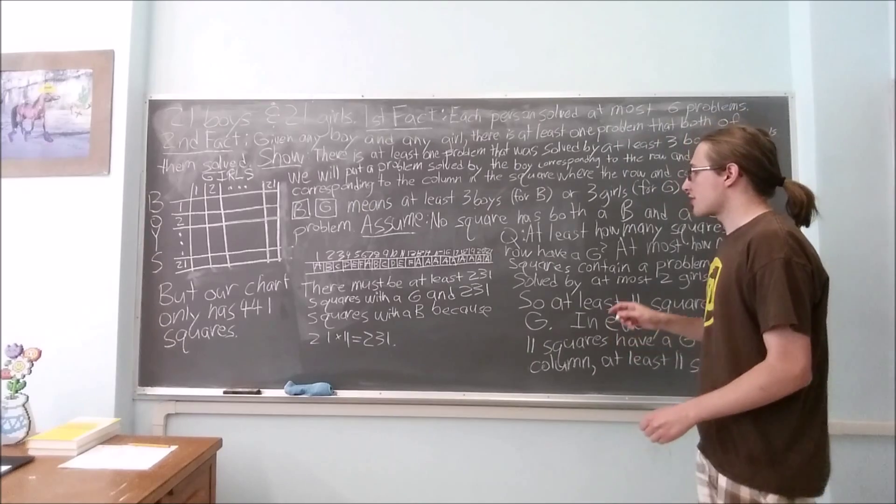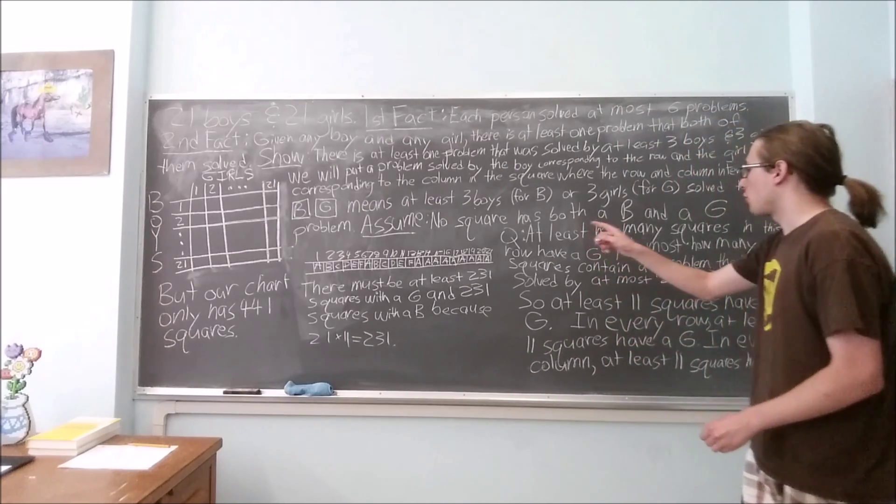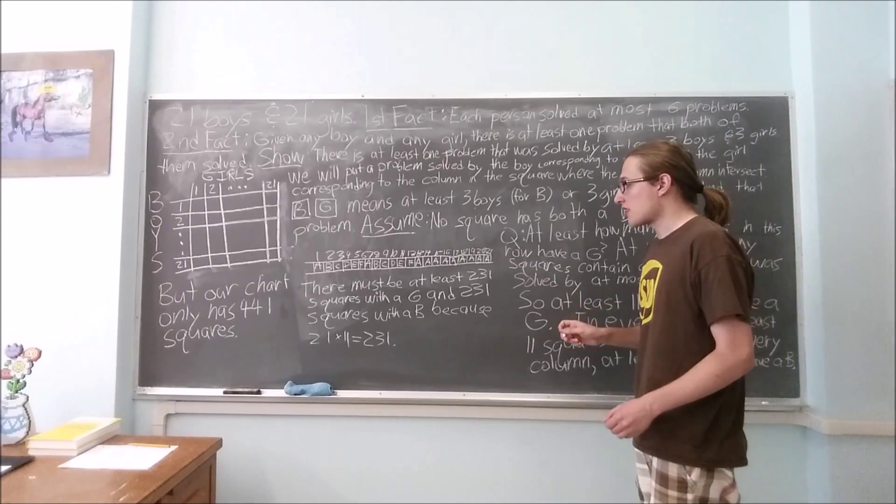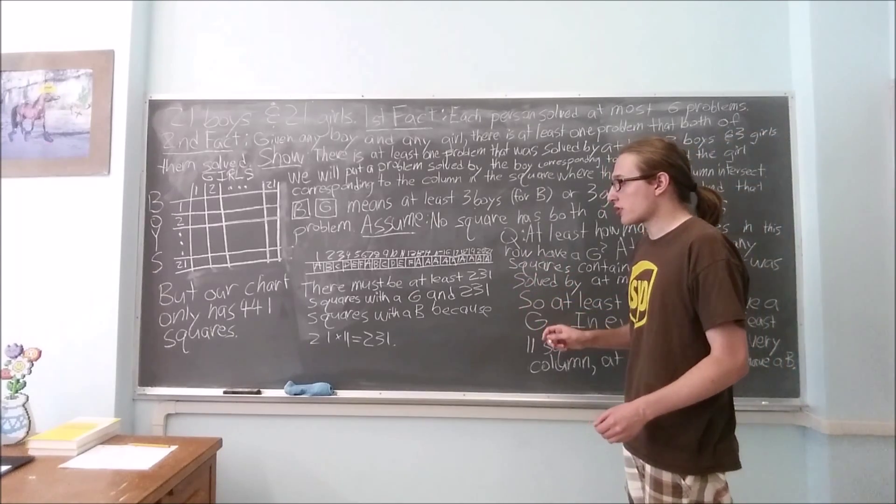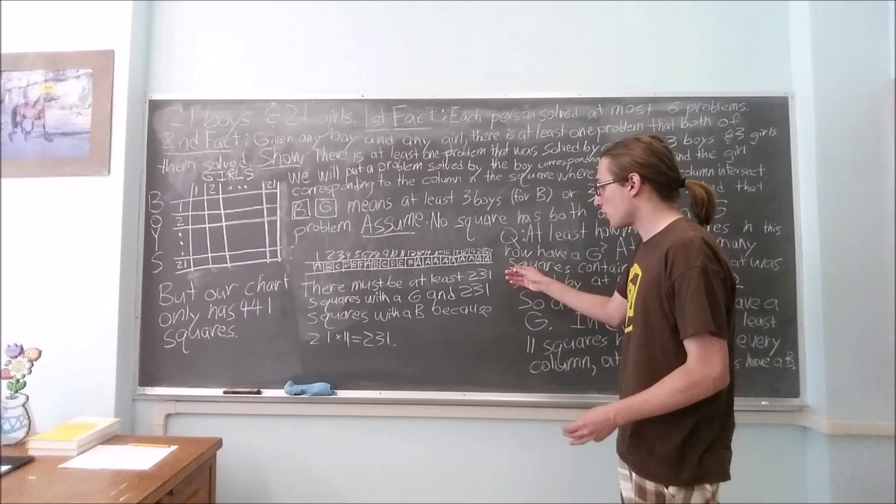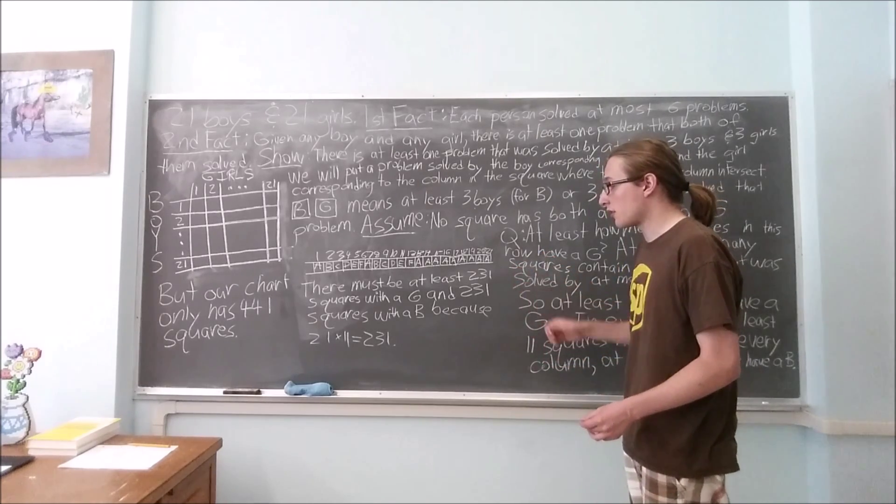Remember that we assumed that there is no square with both a B and a G. If 231 squares have a B and 231 squares have a G, then that means that there must be at least 231 plus 231 different squares.